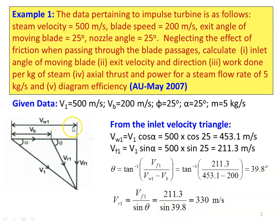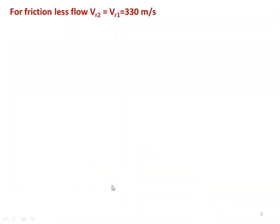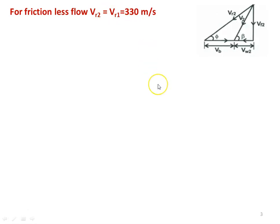VR1 equals VF1 divided by sin theta, which is 211.3 divided by sin 39.8, equal to 330 meters per second. Since the problem specifies frictionless flow, VR2 equals VR1, equal to 330 meters per second.